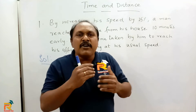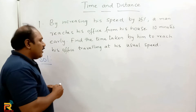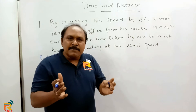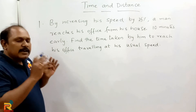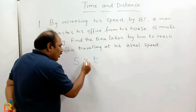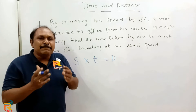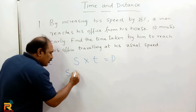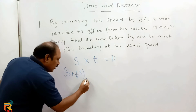Since distance is constant, and distance equals speed × time, let us assume his usual speed is s and his usual time is t. So distance = s × t. Now he increases speed by 25%, which is one-fourth of s, so his new speed is s + s/4 = 5s/4.